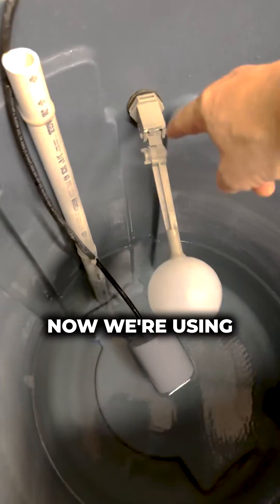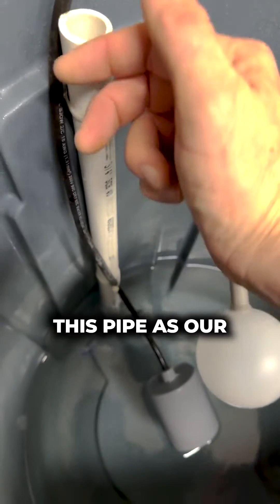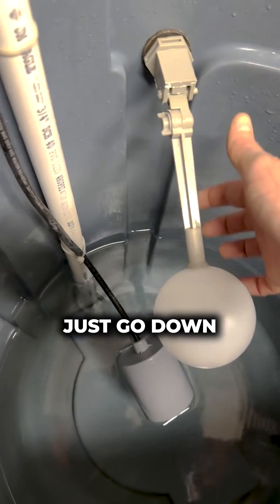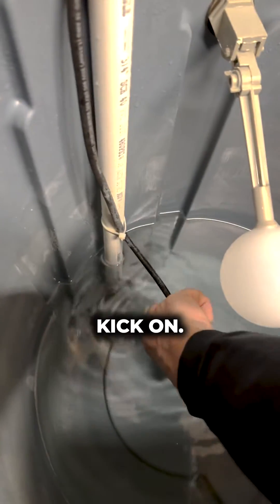In our kits now we're using brass fittings and it has threads here so we don't have to have this pipe as our can chase. It can just go down right here. So once this drops low enough, the dosers will kick on.